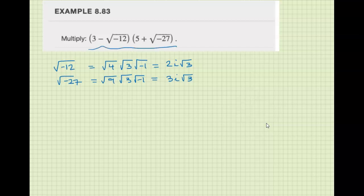Let's rewrite this. We have 3 minus 2i square root of 3, 5 plus 3i square root of 3.